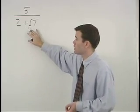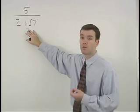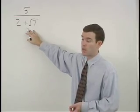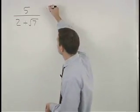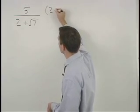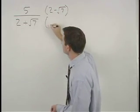The conjugate of 2 plus root 7 is 2 minus root 7. So here we multiply top and bottom of the fraction by 2 minus root 7.